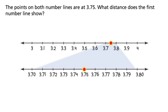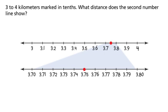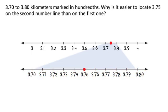What distance does the first number line show? 3 and 70 hundredths to 3 and 80 hundredths kilometers marked in hundredths. Why is it easier to locate 3 and 75 hundredths on the second number line than on the first one?